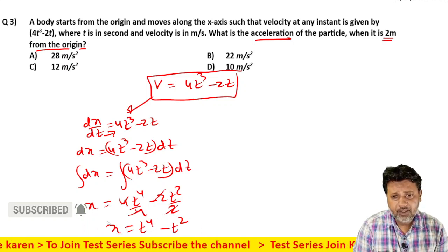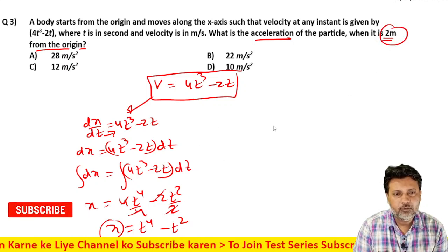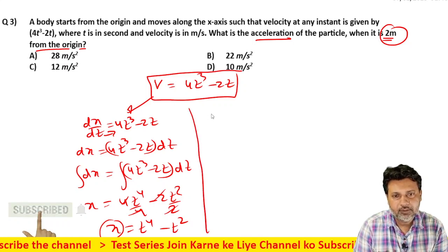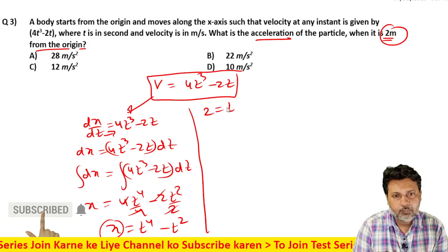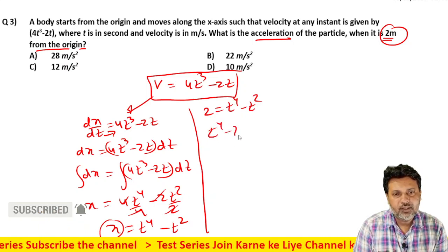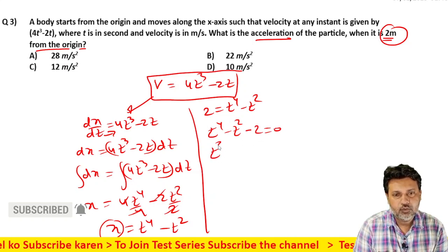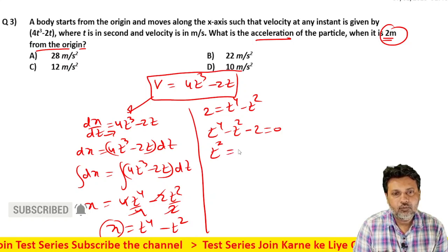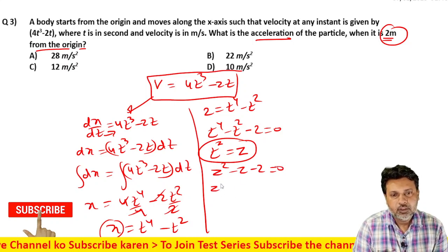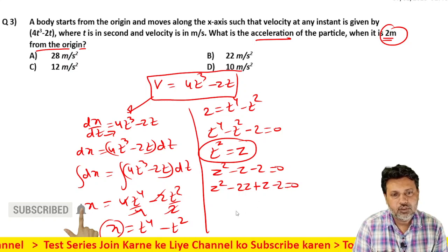अगर मैं x की value 2 put करता हूँ जैसा इसमें बोला है, तो कितने time पे यह 2 meter पहुंचेगा — यह हमको पता चल जाएगा। तो 2 = t⁴ minus t², यानि t⁴ minus t² minus 2 = 0. t² को z consider करें तो: z² minus z minus 2 = 0.